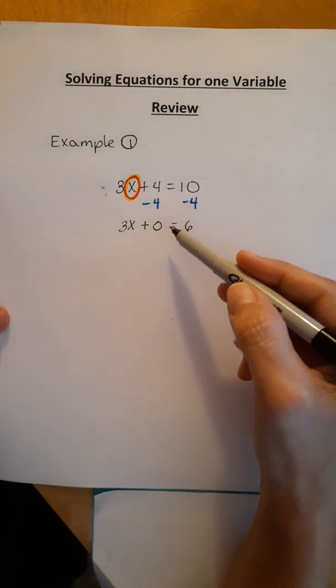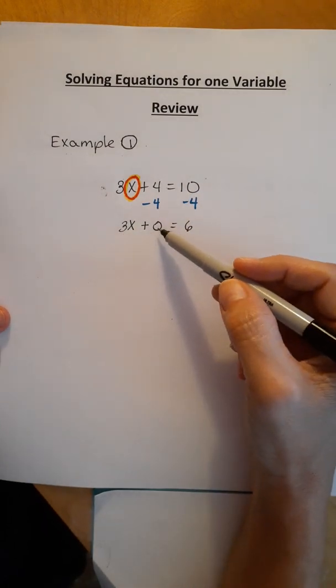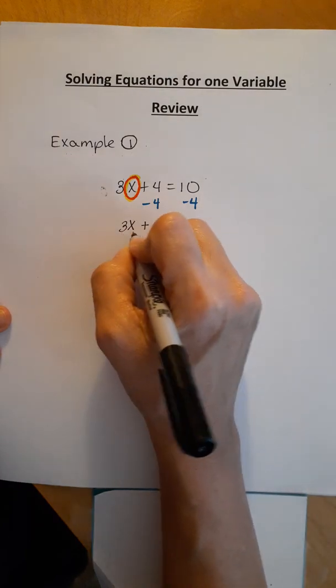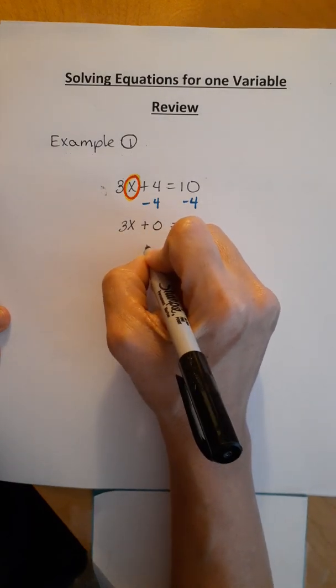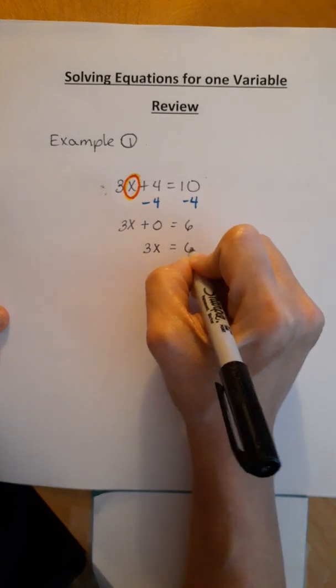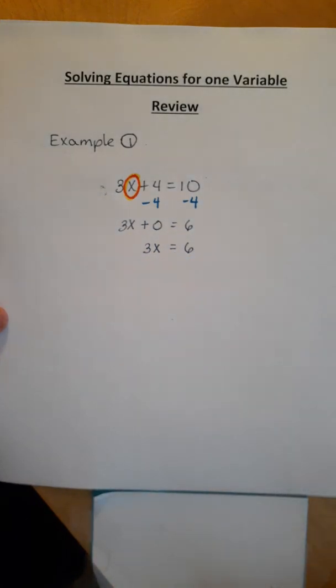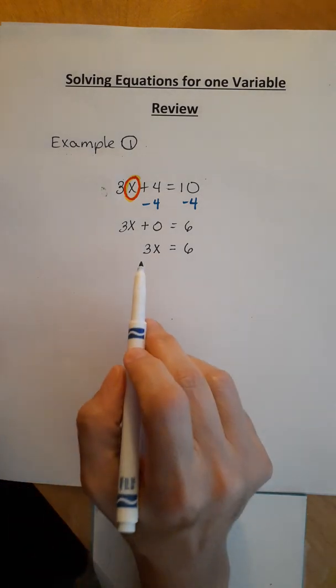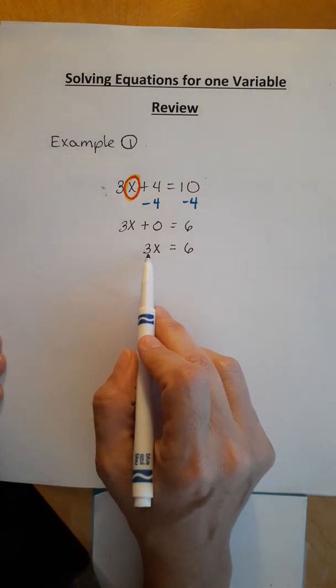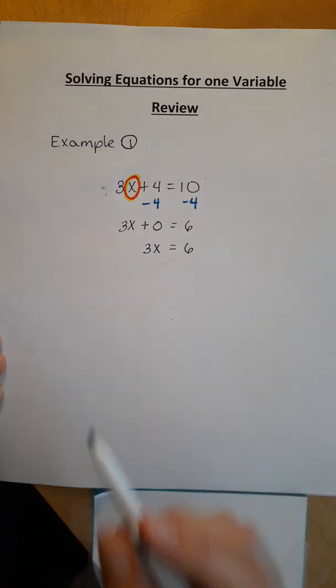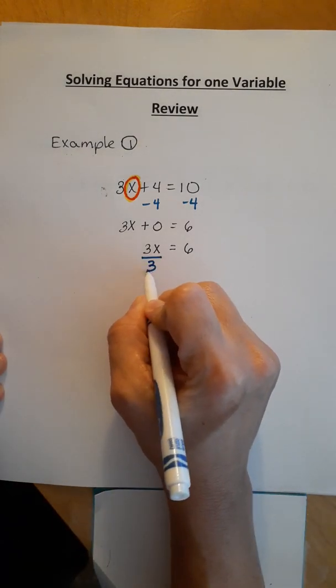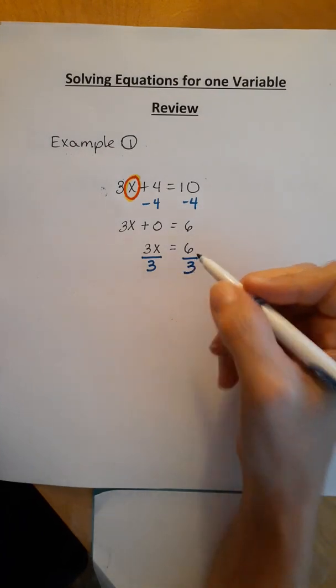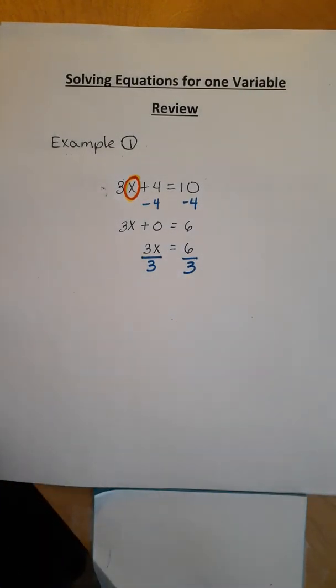When I get to this point, anything plus 0 is whatever you're adding to the 0. So 3x plus 0 is 3x equal to 6. And you can see how this is starting to go down. My next step is I just have one number next to x, and it's attached to the x in multiplication, 3 times x. The opposite of multiplication is division. And just like the subtraction, what I do to one side, I must do the exact same operation using the same number to the other.